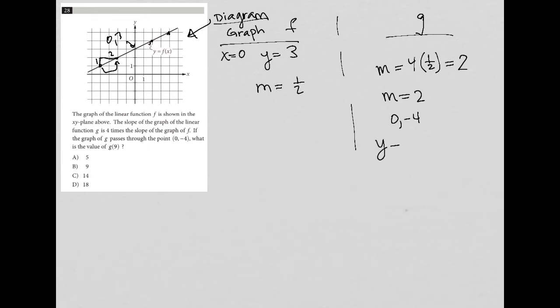And because x is 0 and y is -4, this is actually the b value. So b is -4, which means I have the equation y = 2x - 4.